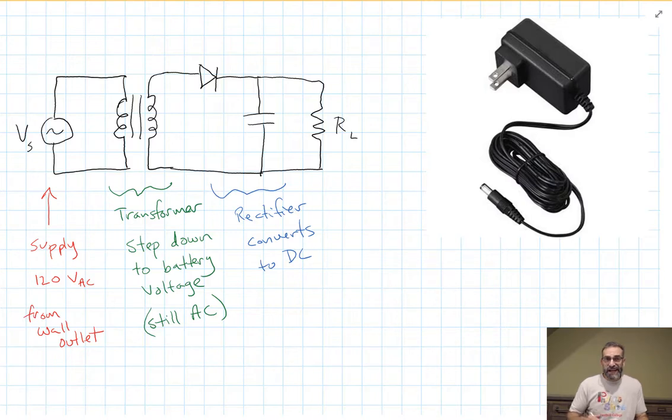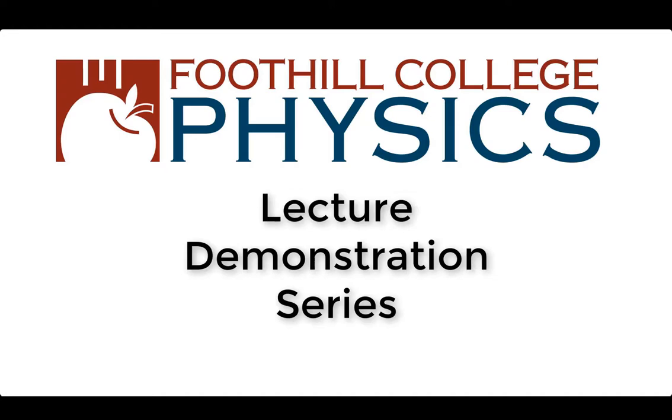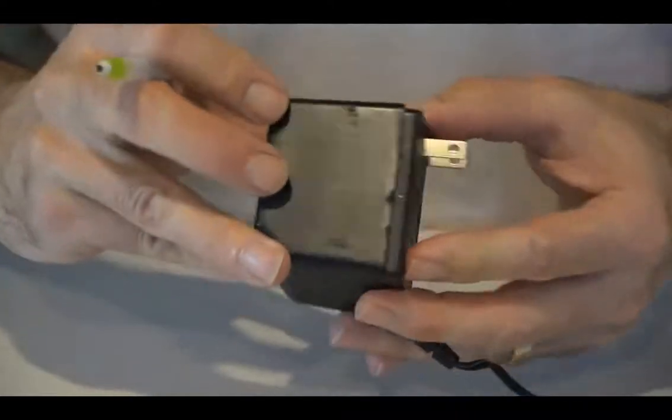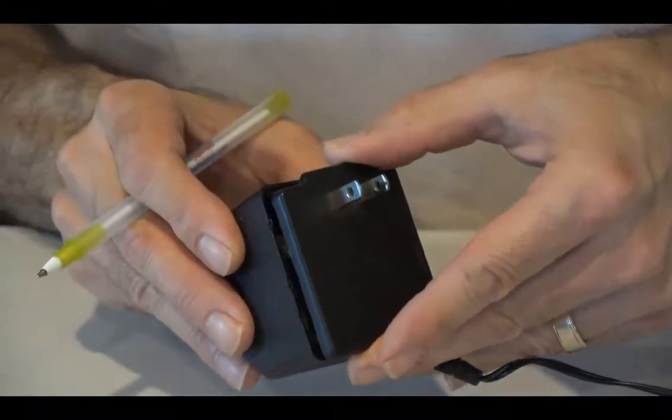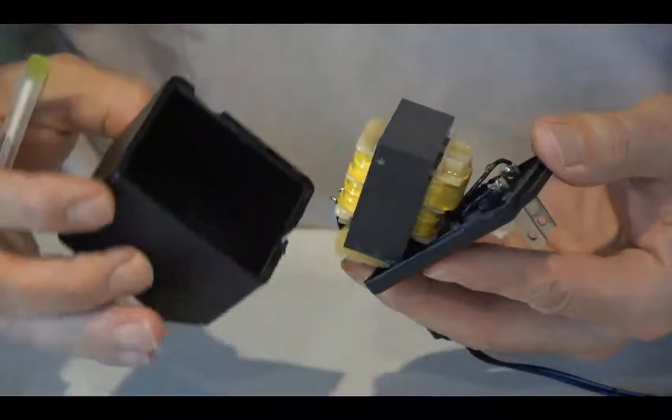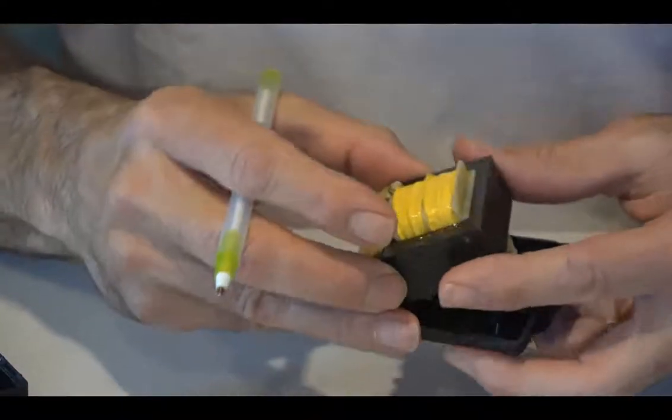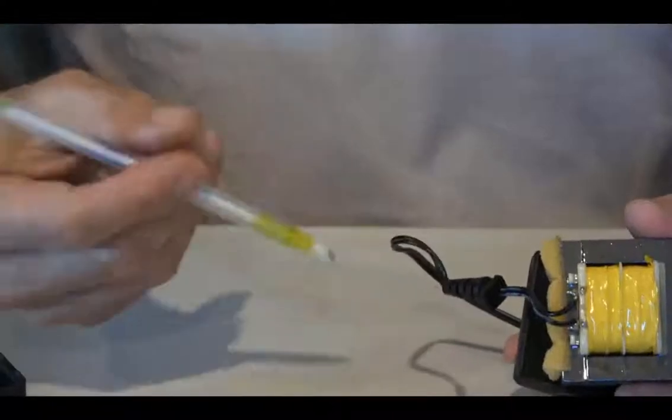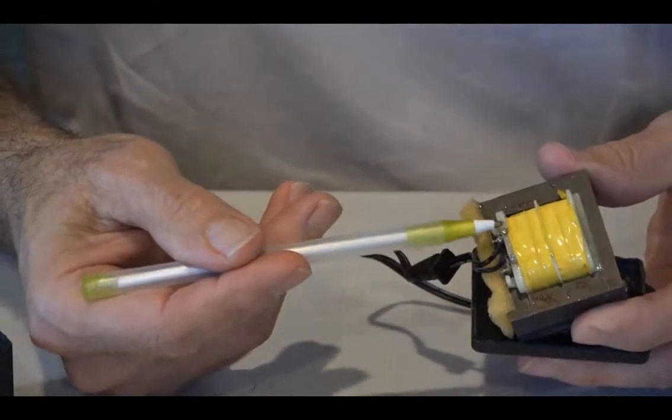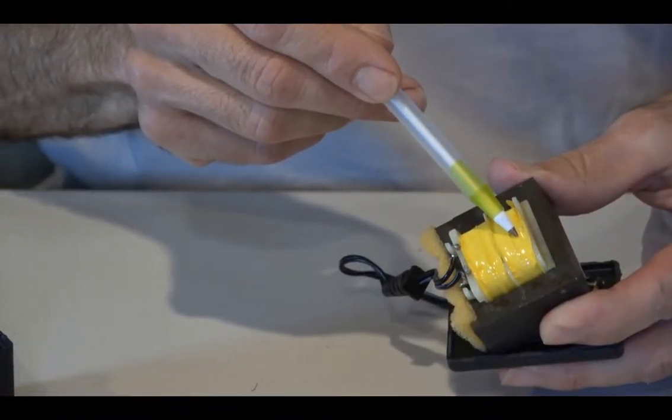Let's take a look inside a power adapter and see if we can figure out how it works. We are all familiar with these little black boxes we plug into the wall and use to power our battery operated devices: calculators, laptops, and things like that. Let's open it up and see what's inside. What do we expect to see? Well, we expect to see a transformer.